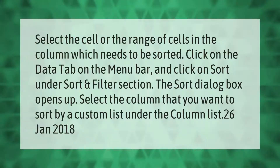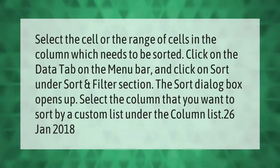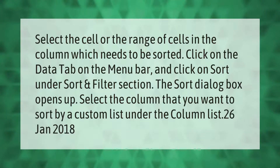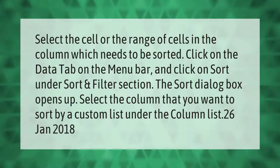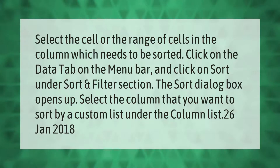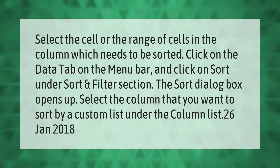Select the cell or the range of cells in the column which needs to be sorted. Click on the Data tab on the menu bar and click on Sort under the Sort and Filter section. The Sort dialog box opens up. Select the column that you want to sort by a custom list under the column list.